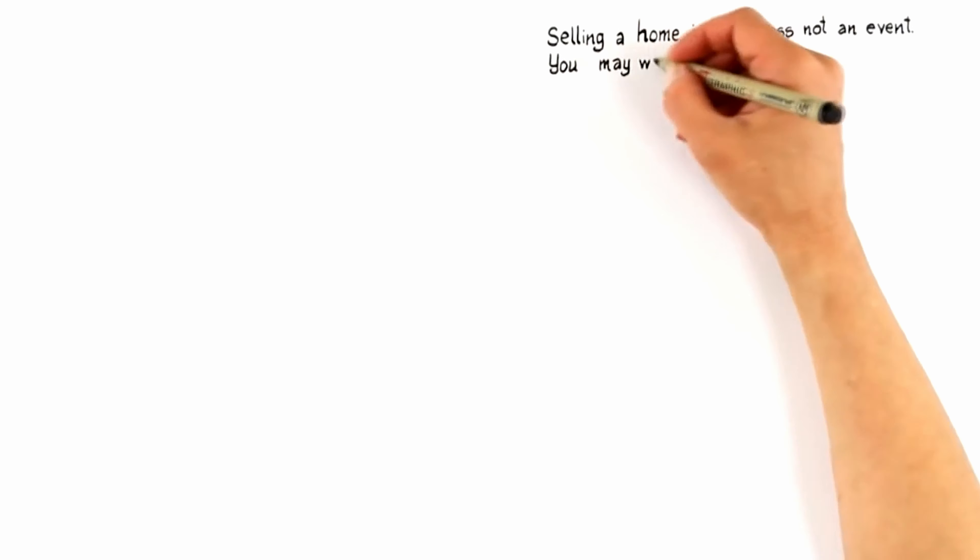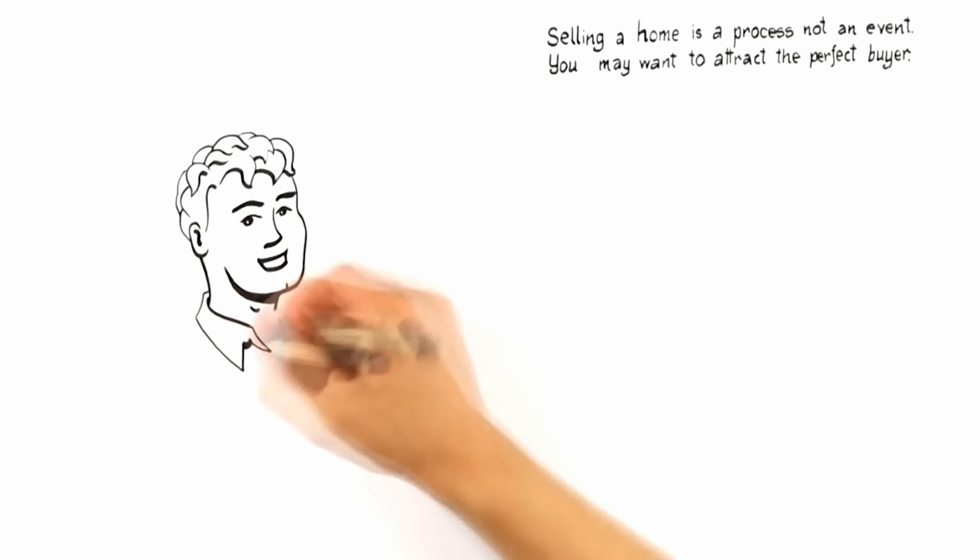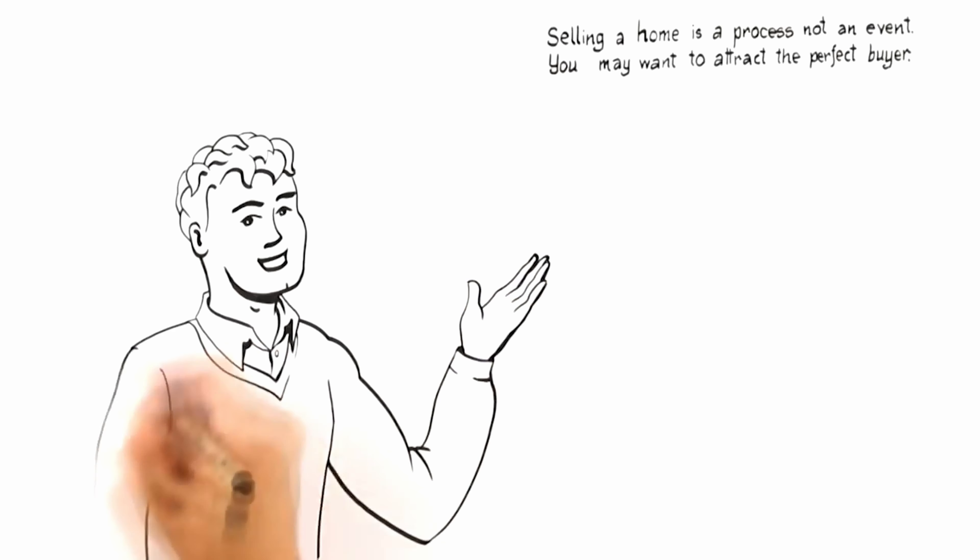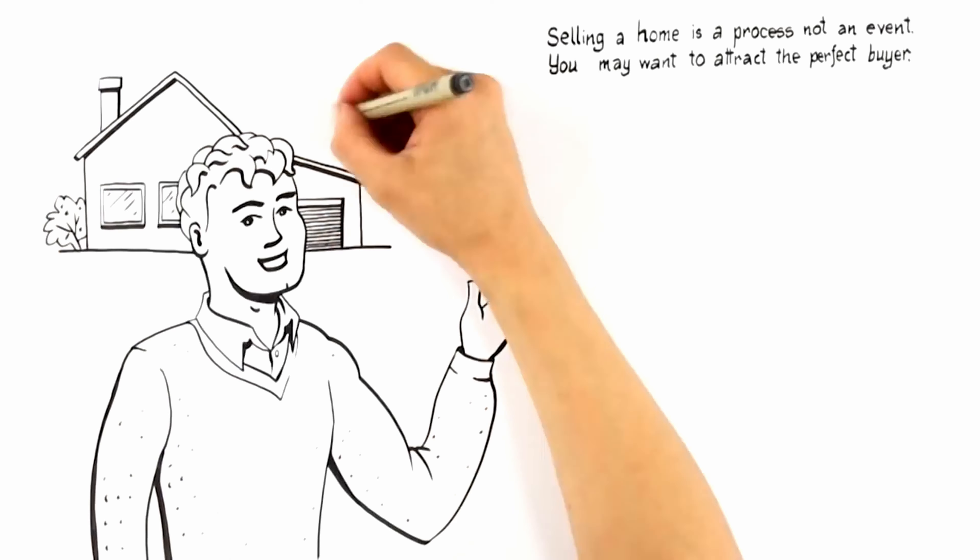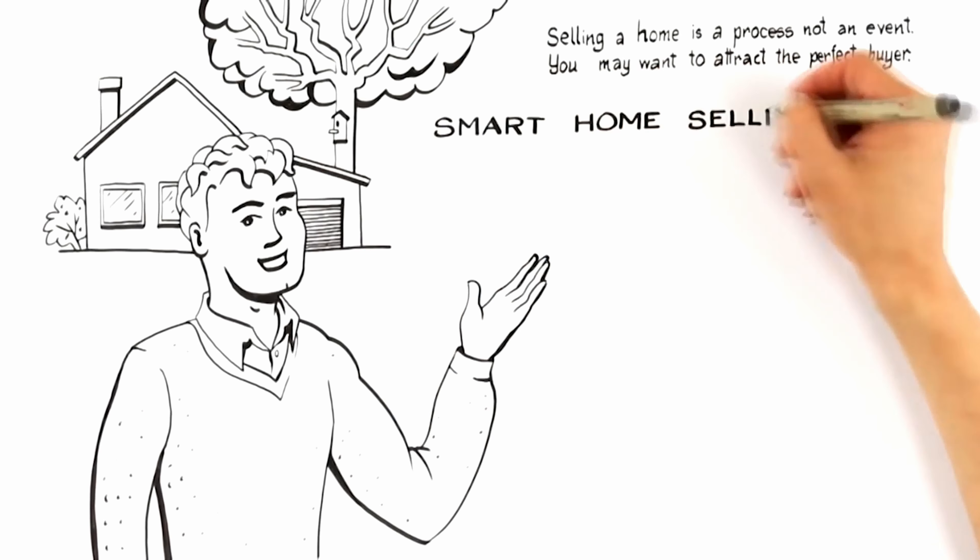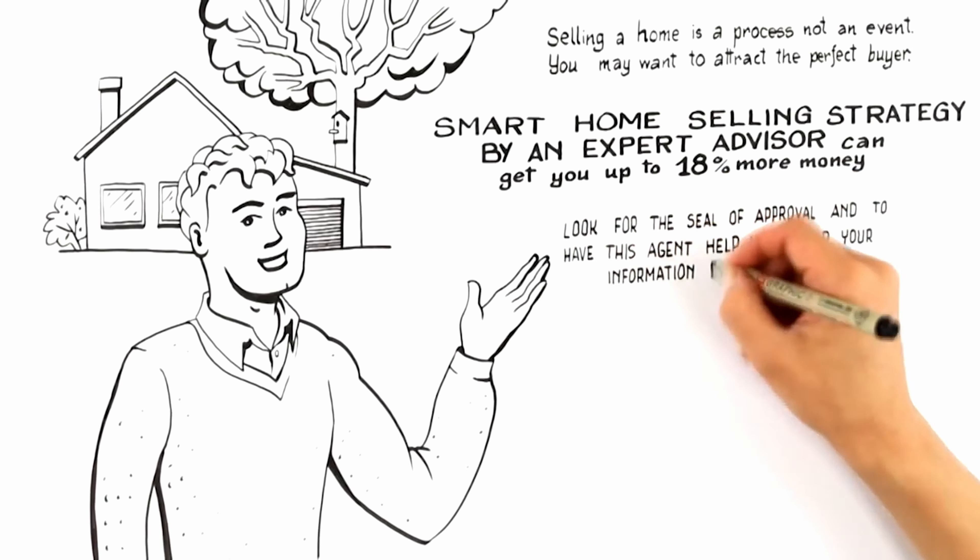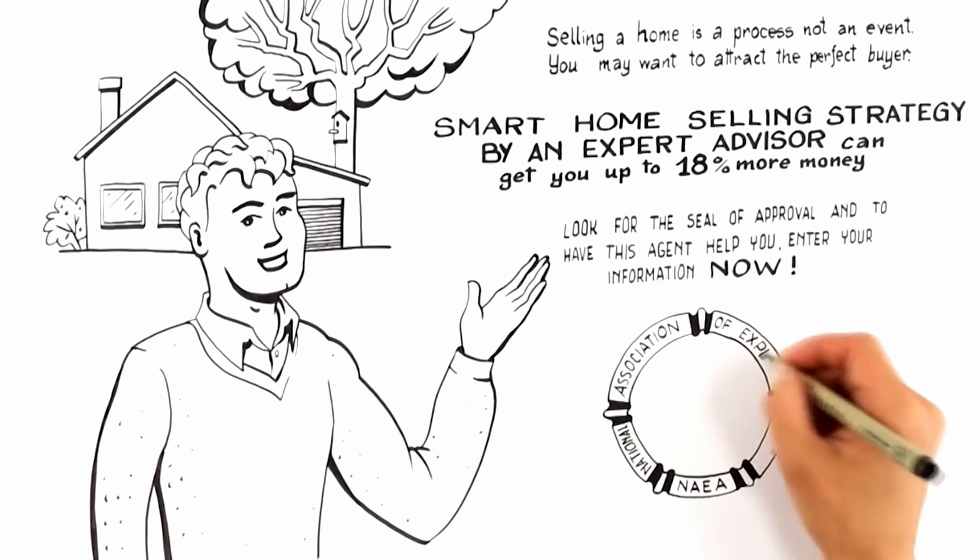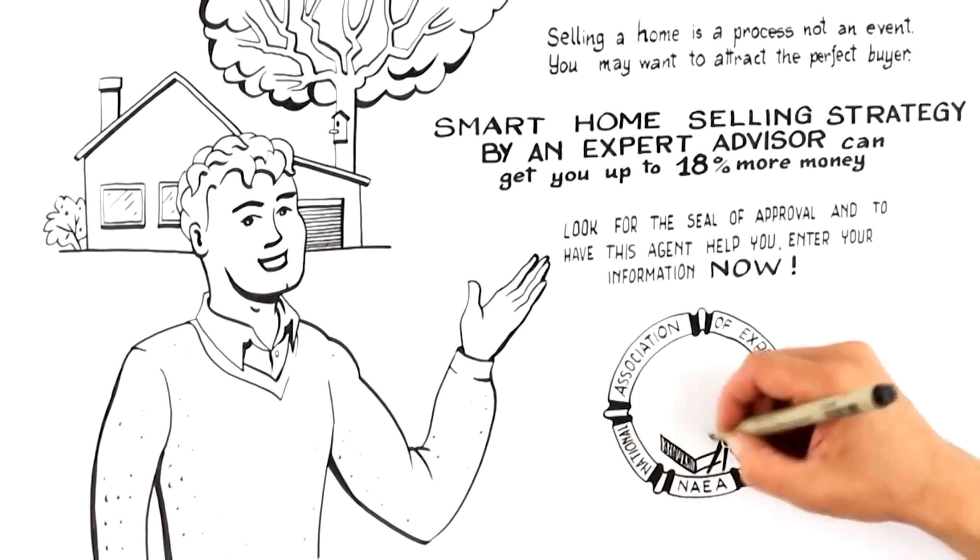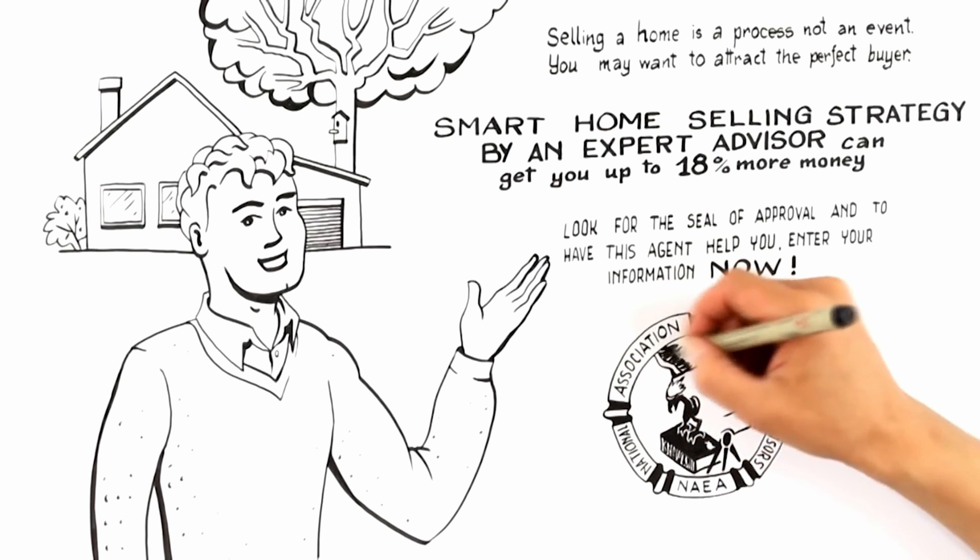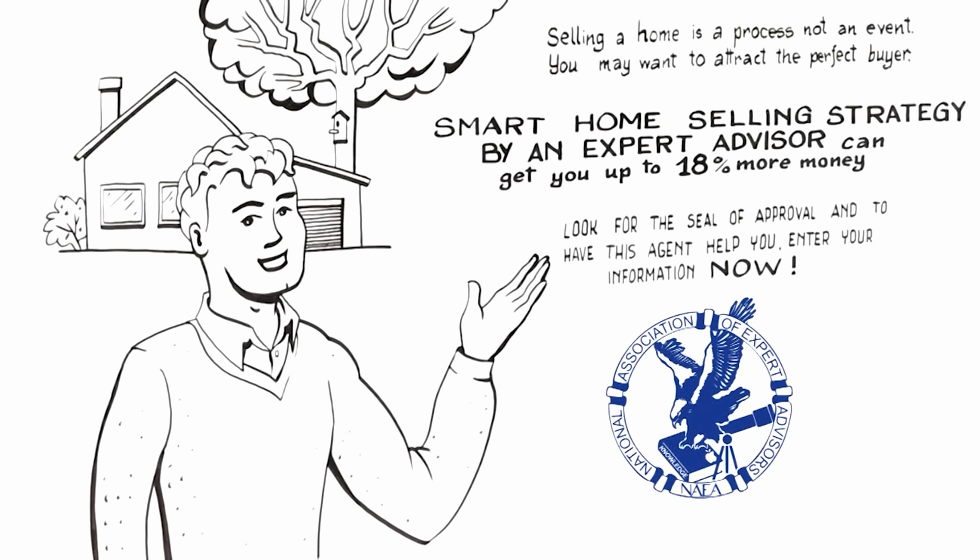By now you know selling a home is a process, not an event. You also learned how to hire an expert who can attract the perfect buyer willing to pay top dollar for your home. So if you're selling, the next logical step is to request a free, no commitment smart home selling strategy from an expert advisor. Expert advisors are members of the National Association of Expert Advisors who are trained and certified to prepare a smart home selling strategy that can sell your home faster and for up to 18% more money than the traditional real estate agent. Look for the seal of approval and to have this agent help you, call the number now. Thank you.